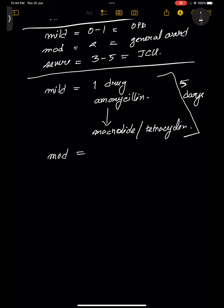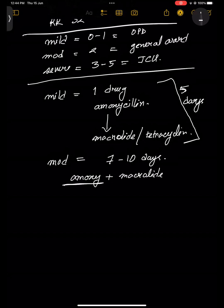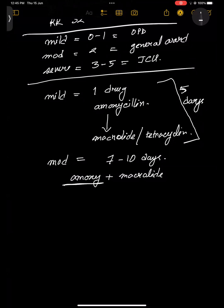Moderate or severe is 7 to 10 days. For moderate and severe, you go for two-drug dual therapy. You can give amoxicillin plus macrolides. Instead of amoxicillin, you can use cephalosporins like ceftriaxone, or piperacillin-tazobactam. So: ceftriaxone plus macrolides, or piperacillin-tazobactam plus macrolides — whichever is in your options.